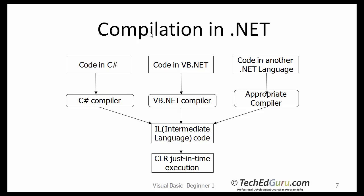This is how the compilation in .NET works. Pick any language that you like — C Sharp, Visual Basic. When you write the code, it gets compiled to the intermediate code using the appropriate compiler. And when you run the program, when you run that IL code, it is run with the CLR using just-in-time execution. You don't really need to worry about many of these details to get started with one of these languages like Visual Basic.